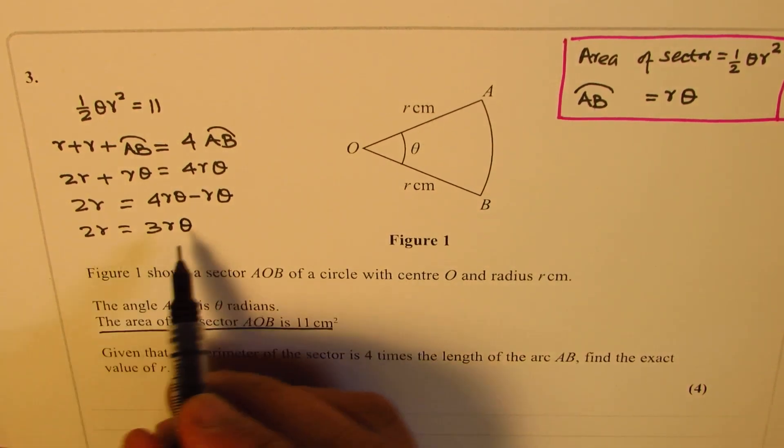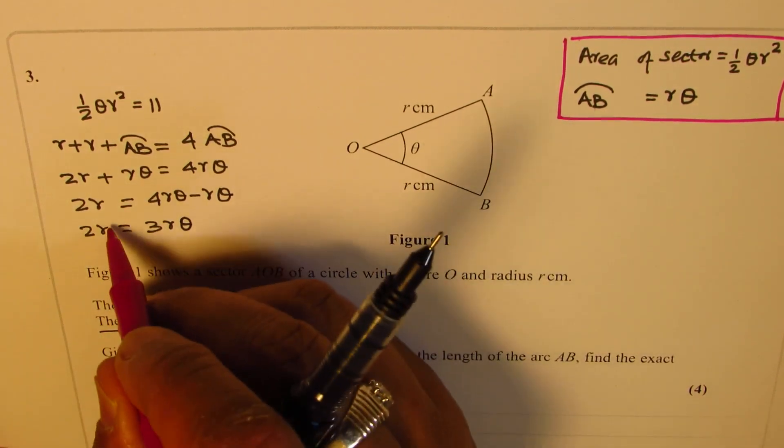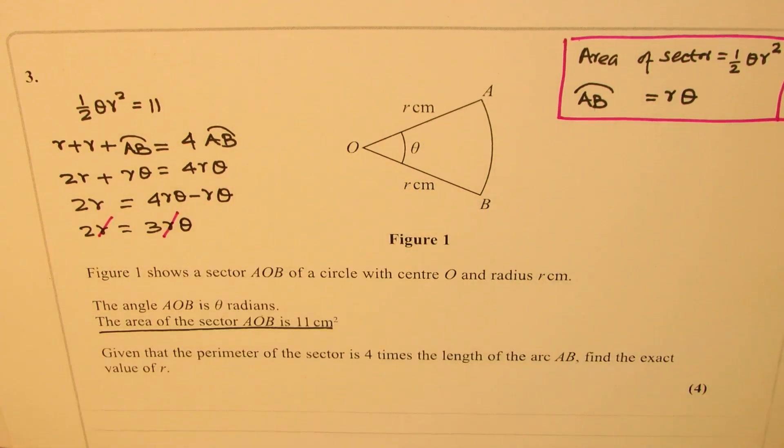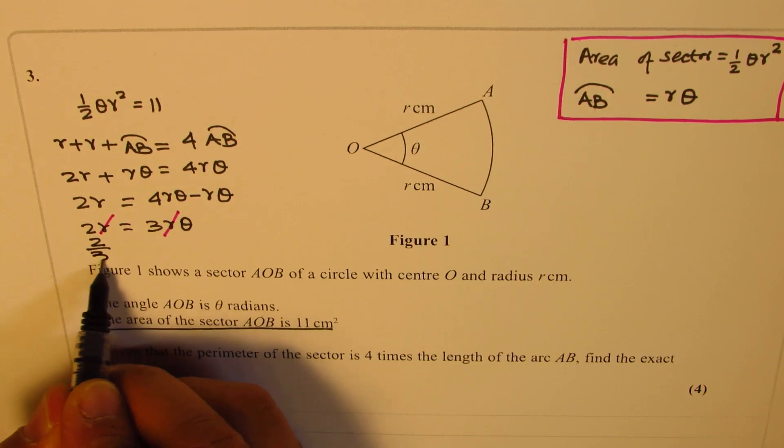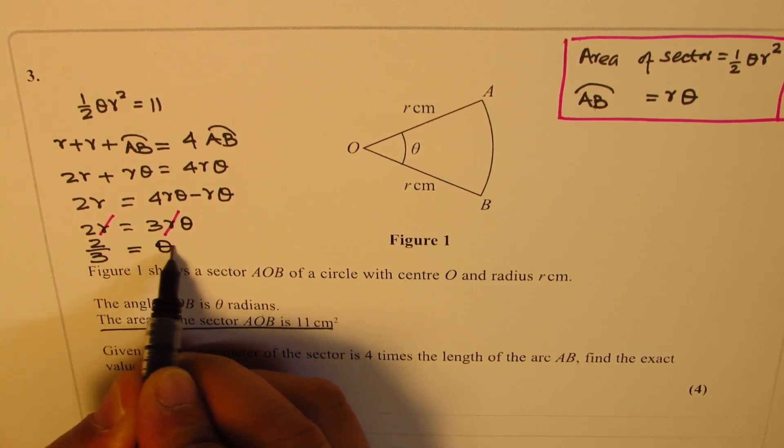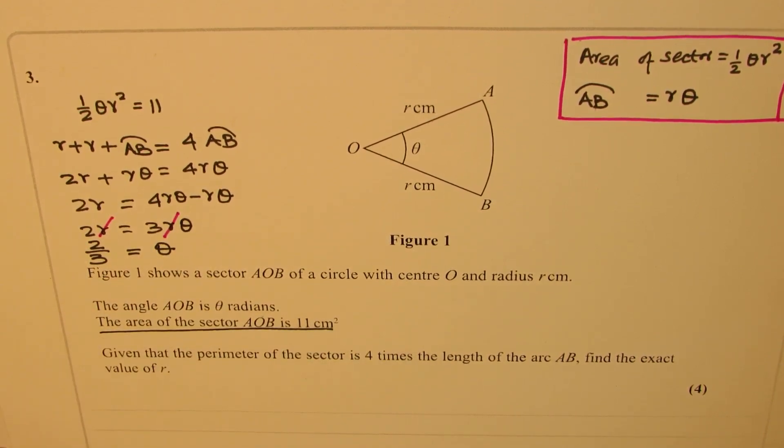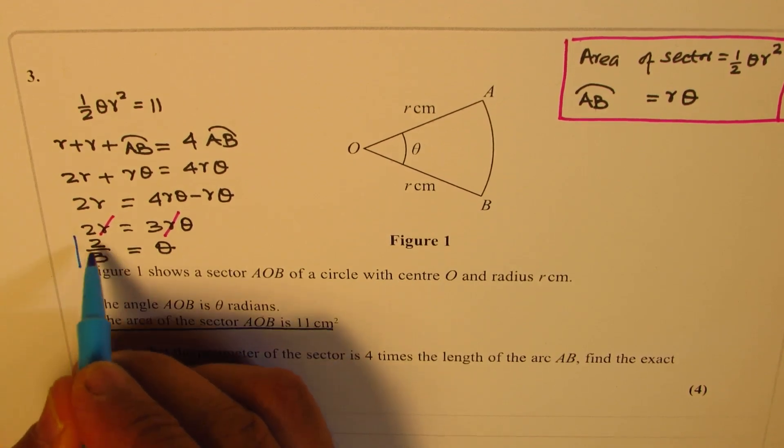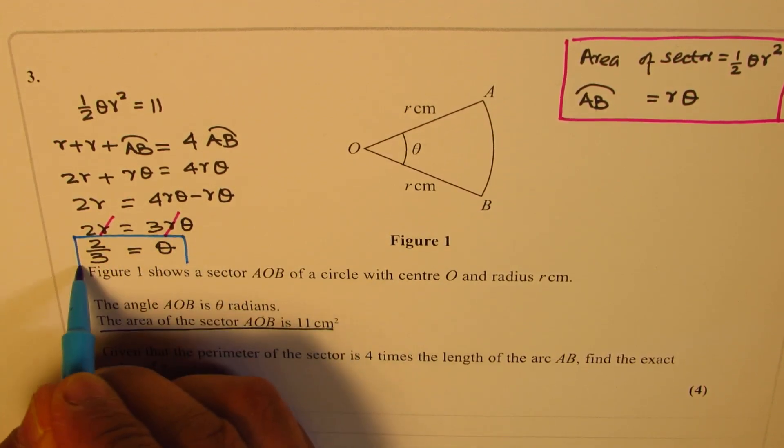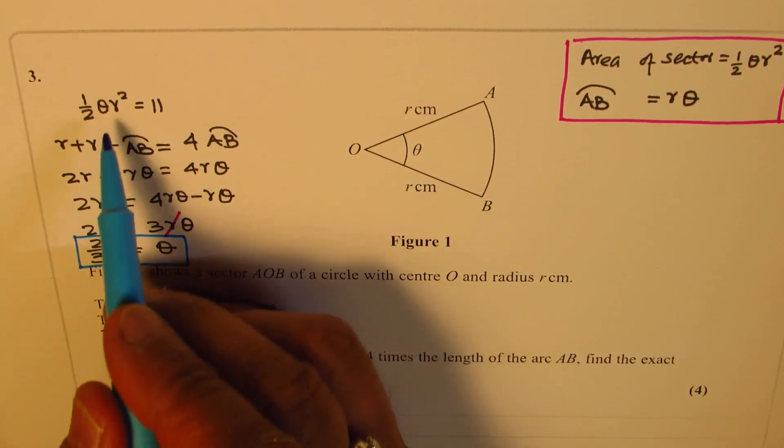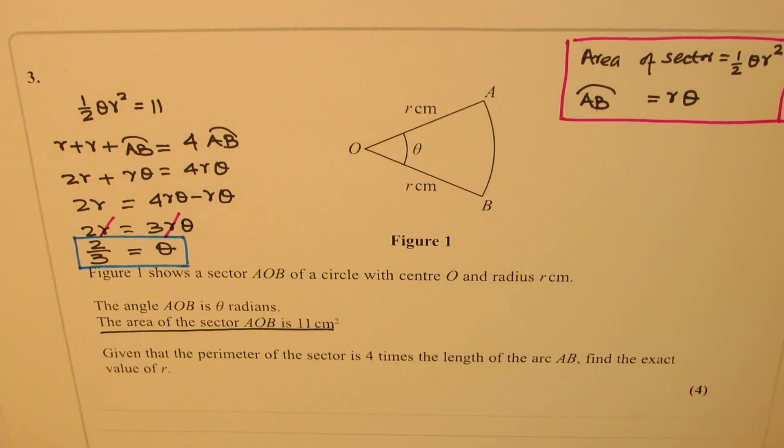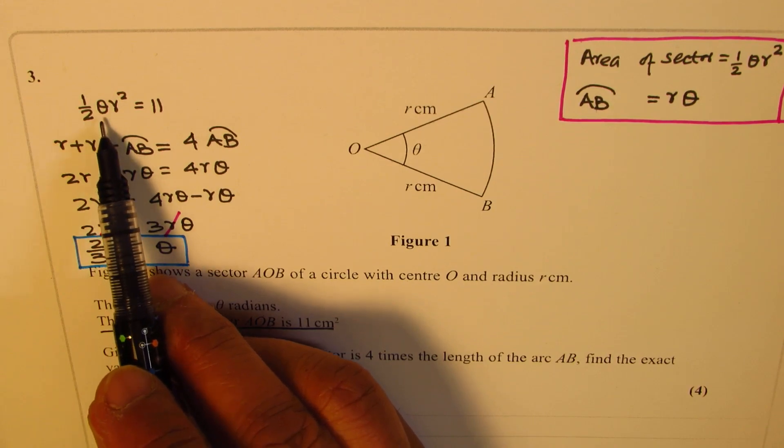Right, so r and r can cancel, and so we can write 2 over 3 is equal to theta. So we get one value which is theta is 2 over 3. We need to find what r is, so let's look into this equation now and we'll substitute theta equals to 2 over 3.